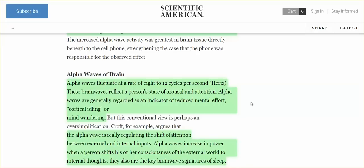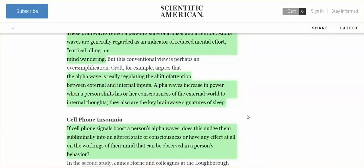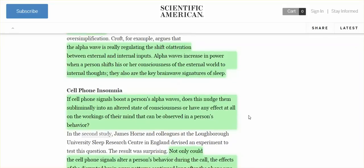These brain waves reflect a person's state of arousal and attention. Alpha waves are generally regarded as an indicator of reduced mental effort, cortical idling, your brain is relaxed or your mind wandering. So think about all of the people, you can't get their attention, they can't concentrate on anything. The alpha wave is really regulating the shift of attention between external and internal inputs. Alpha waves increase in power when a person shifts his or her consciousness of the external world to internal thoughts. They also are the key brain wave signatures of sleep.